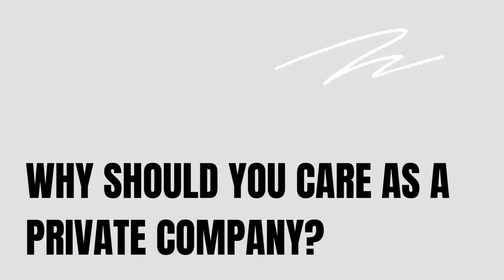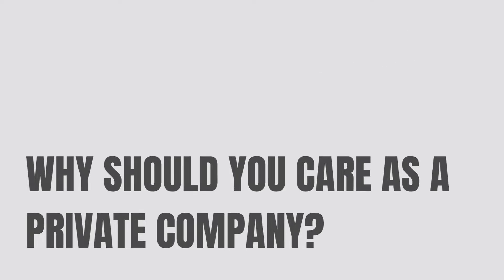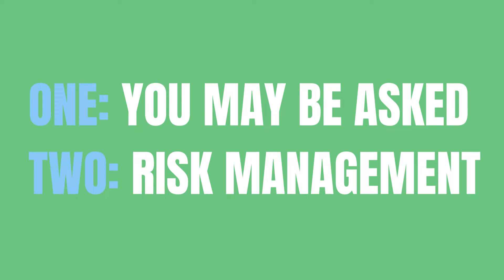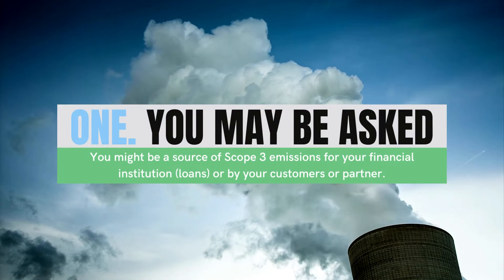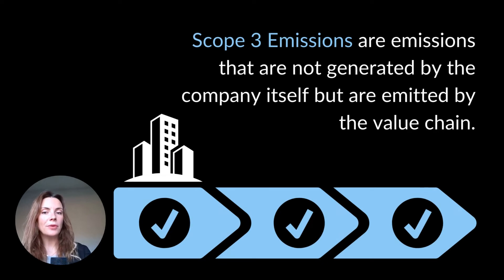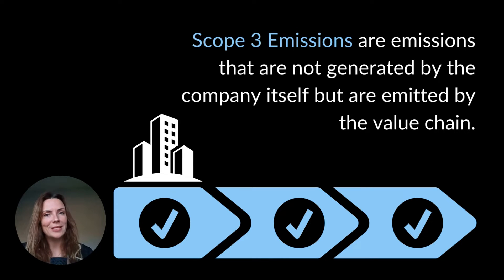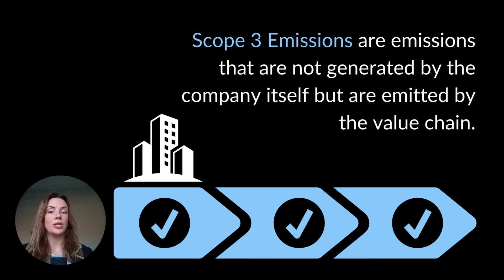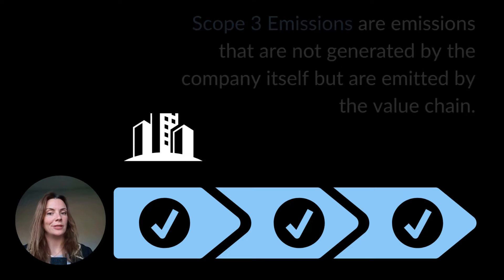So why would companies want to care about the TCFD? Why pick this framework if you're a private company? Well, for two reasons: you're going to be asked, and two, risk mitigation. You may be asked to comply and disclose your emissions. You may be a source of Scope 3 emissions for your financial institution, those lending you money, or a customer you supply to. As part of their value chain, you'll need to track and measure your own emissions as part of their report — not doing so could get you removed as a partner.